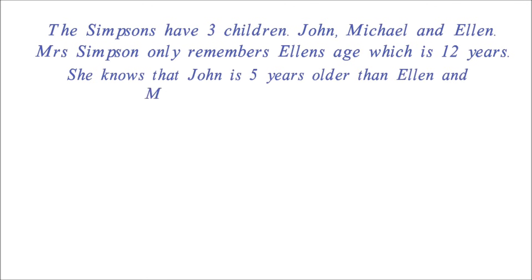The Simpsons have three children: John, Michael, and Ellen. Mrs. Simpson only remembers Ellen's age, which is 12 years. She knows that John is five years older than Ellen, and Michael's age is three less than Ellen. What are the ages of John and Michael?